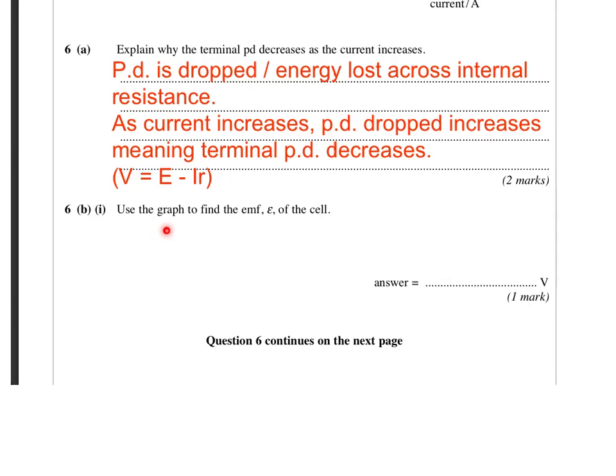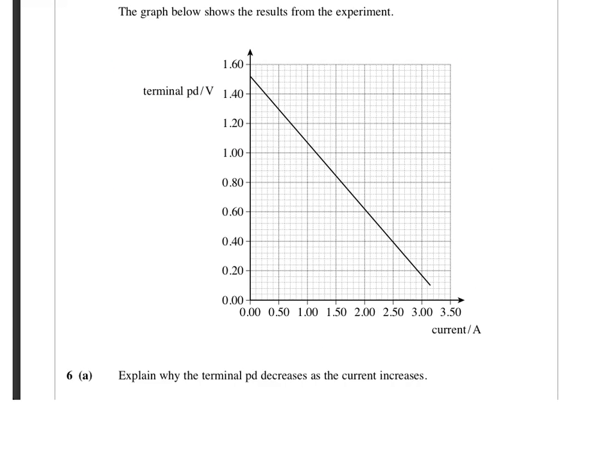The next part of the question asks us to use the graph to find the EMF of the cell. So here's our graph again. And we should remember that the intercept there was equal to the EMF. Another way of thinking about it is that here the current is zero, isn't it? And if no current flows, then no potential difference is dropped across the internal resistance. And whatever that terminal PD is, is going to be equal to the EMF.